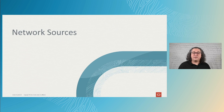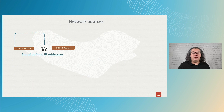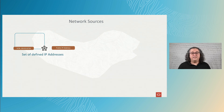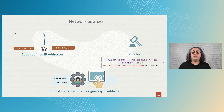The next concept is the network source. A network source is a set of defined IP addresses. The IP addresses can be public IP addresses or IP addresses from a VCN within your tenancy. After you create the network source, you can reference it in policies in your tenancy or in the authentication settings to control the origin of the IP addresses.